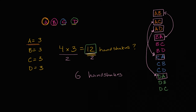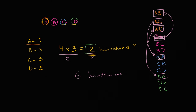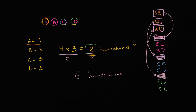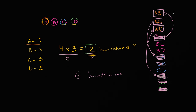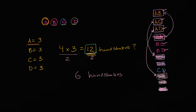And if we want to see the six handshakes, let's get rid of all the double counting. AB is the same as BA — remove it. AC is the same as CA — remove it. AD is the same as DA — remove it. BC is the same — remove it. BD is the same — remove it. And CD is the same as DC. So we are left with one, two, three, four, five, six total handshakes.